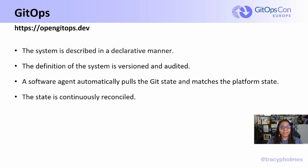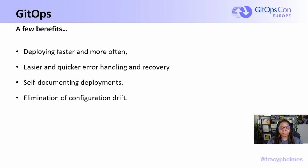And the state is continuously reconciled, meaning any changes happening in Git should also be reflected in the system. You will usually see GitOps paired with Kubernetes, though Kubernetes is not necessarily required. GitOps can absolutely integrate with other deployment pipelines or infrastructure, including containers and VMs. Some benefits of GitOps are deploying faster and more often, easier and quicker error handling and recovery, self-documented deployments, and the complete elimination of configuration drift. These benefits can make it easier to handle applications and allow teams to deliver quality software faster.